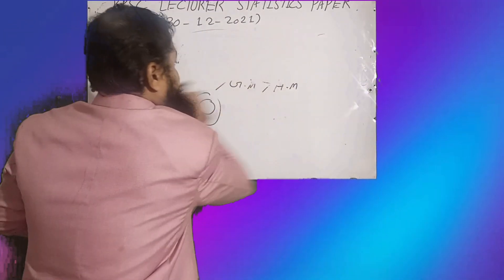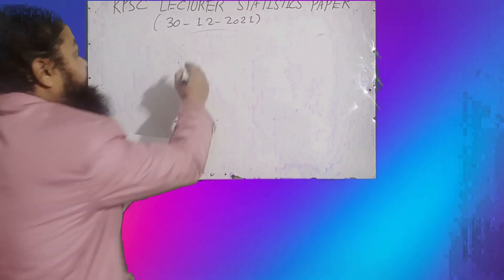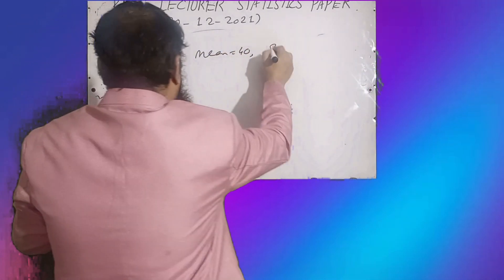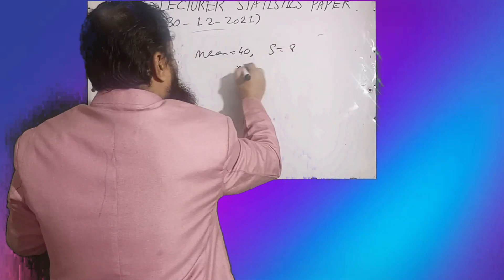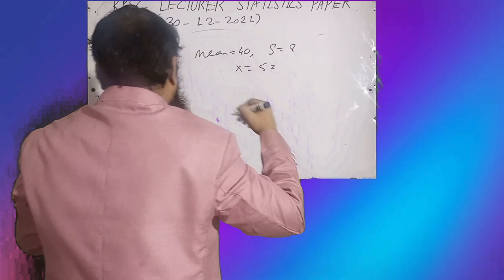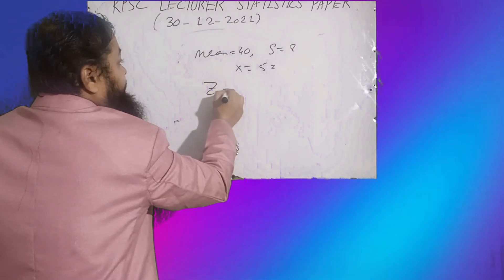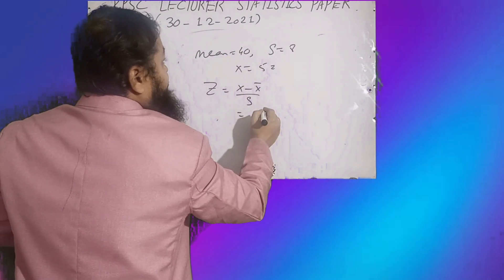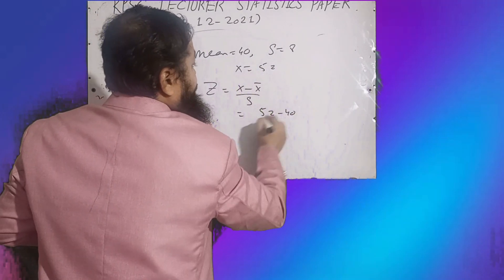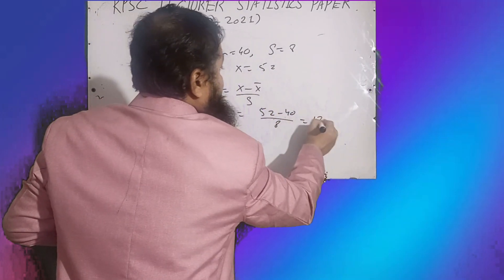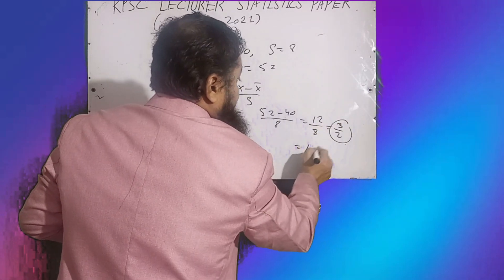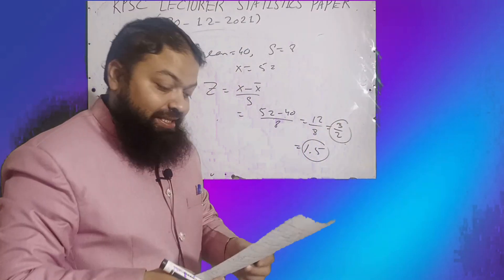The next question: for a normal distribution, mean = 40, standard deviation = 8, and x = 52. What is the value of z? Using the formula z = (x − x̄) / s = (52 − 40) / 8 = 12/8 = 1.5. So 1.5 was the correct option in the exam.